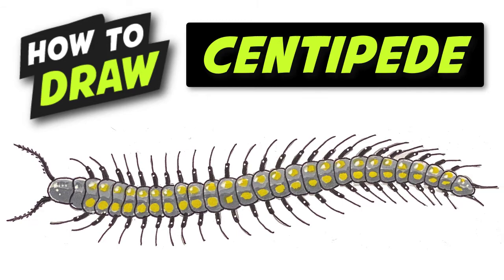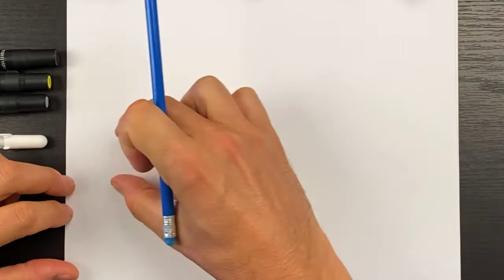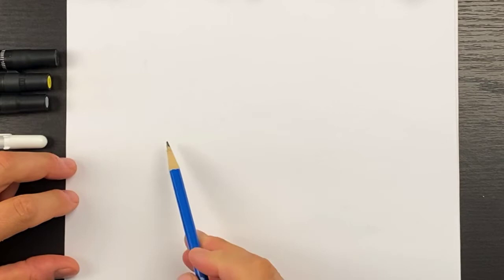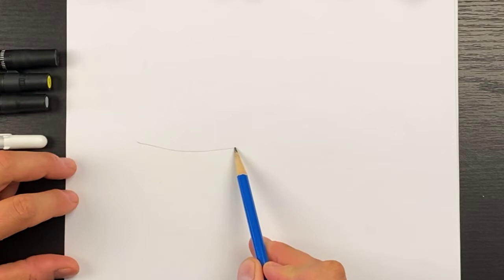So my centipede is going to be going in this direction horizontally. What I'll start off by is drawing a wavy curve, so we'll do like a sideways S, just a subtle one like this.